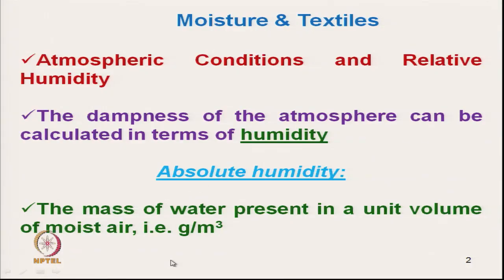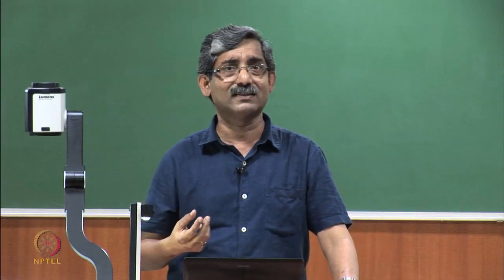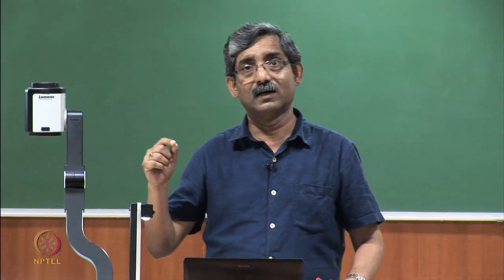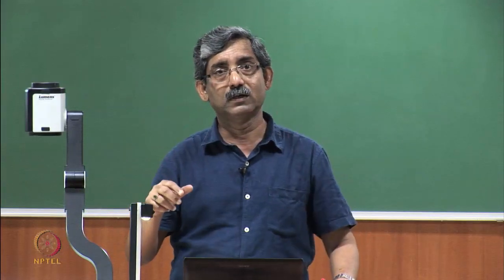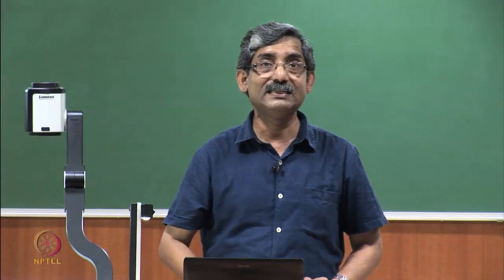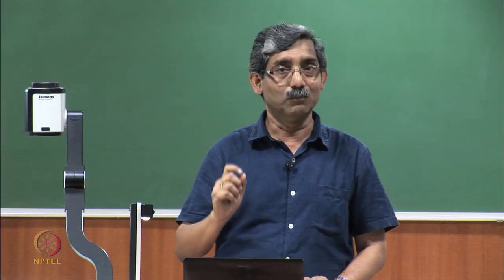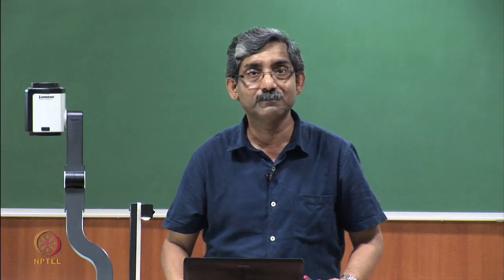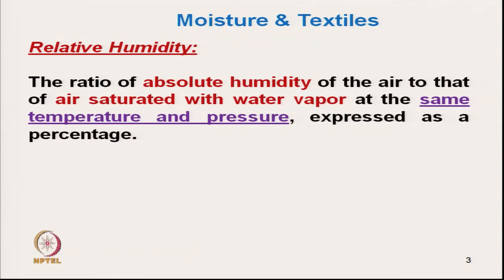Absolute humidity is a useful figure, but it is practically very difficult to weigh the water mass in a particular volume. So we use an alternate, easier way to express humidity — that is called relative humidity. Relative humidity is the ratio of absolute humidity of the air to that of air saturated with water vapour at the same temperature and pressure.